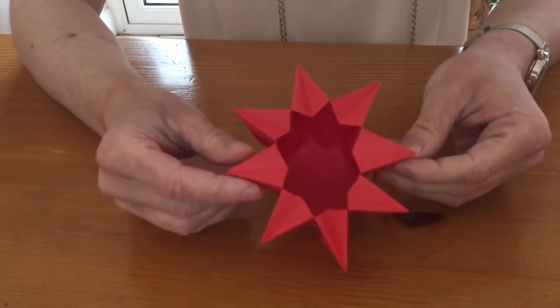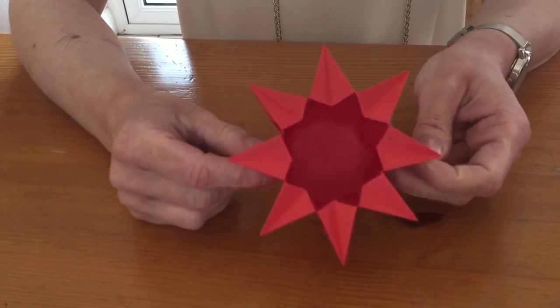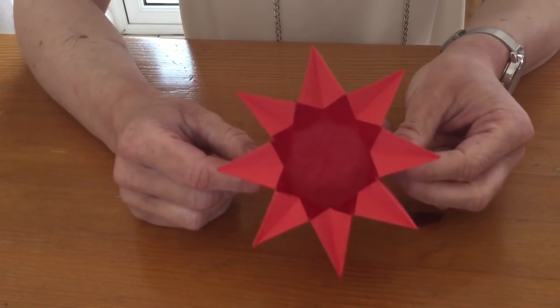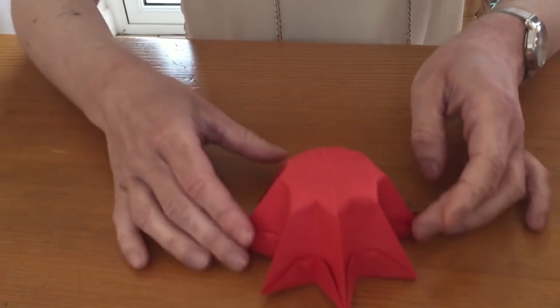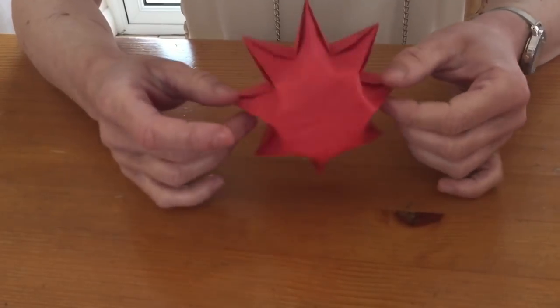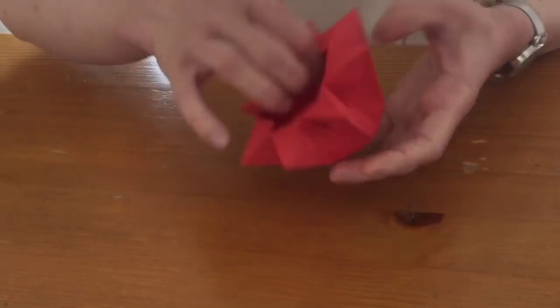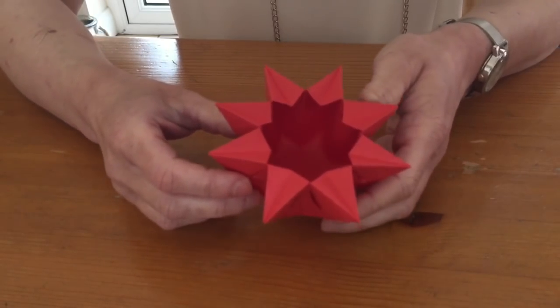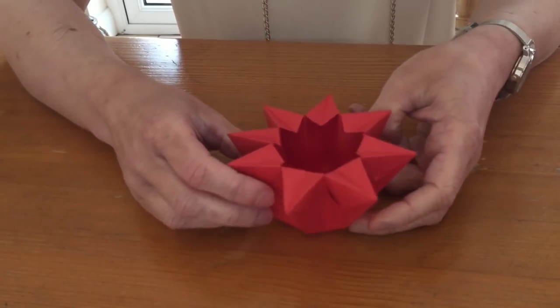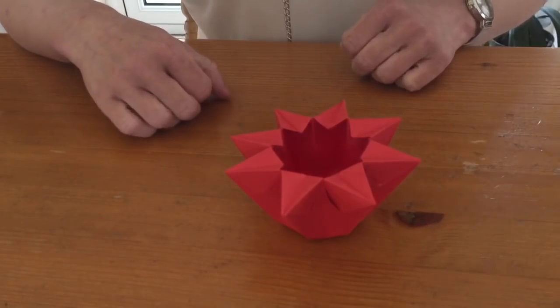So there you have your little star lantern. You can see why it's called a star. So there's the bottom of it. That's how you create your star lantern. Let's do it open.